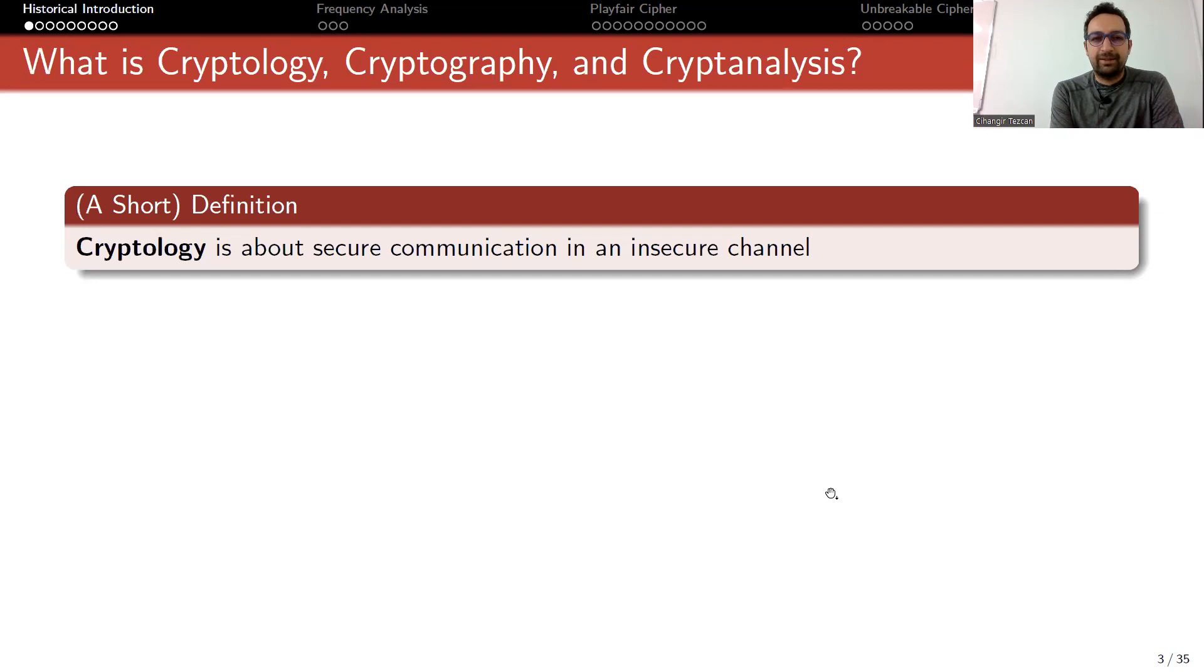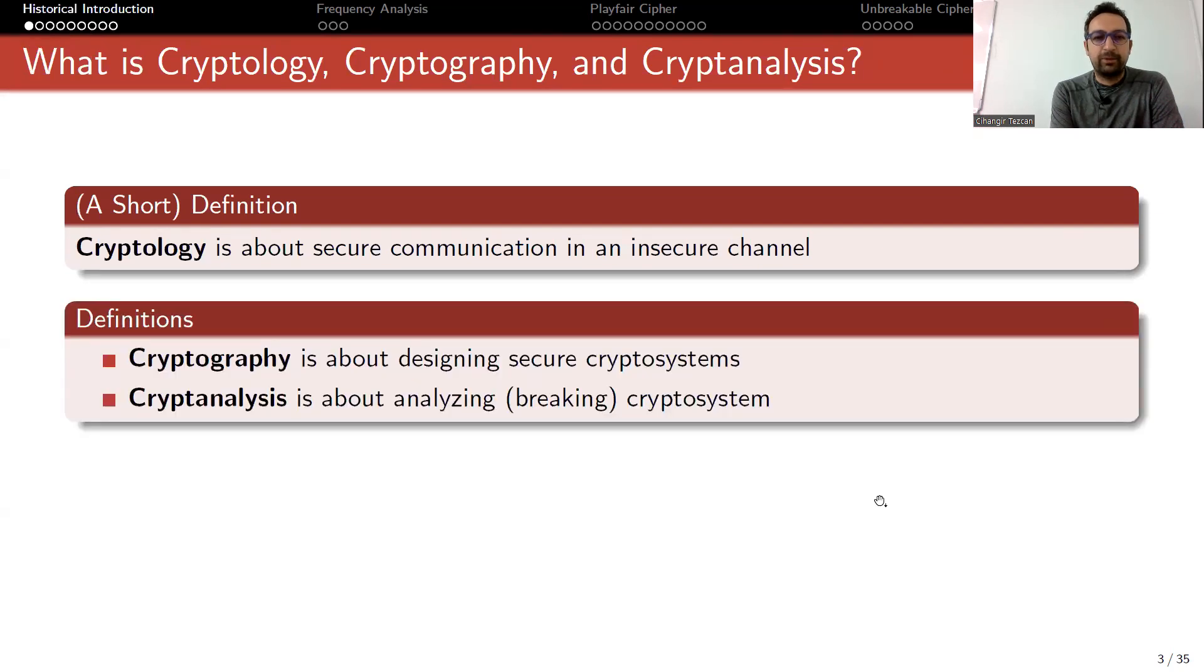Cryptography is about designing secure crypto systems, and cryptanalysis is about analyzing or breaking these crypto systems. In order to design something good, you have to know how to break them, so this goes hand in hand. In the past, cryptology was used for the name of the science, then divided into two: cryptography and cryptanalysis.